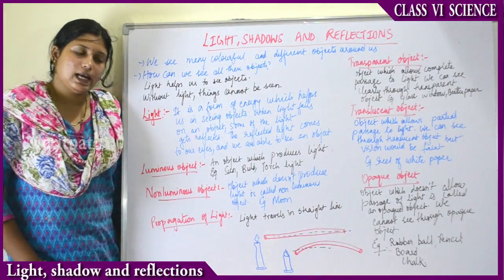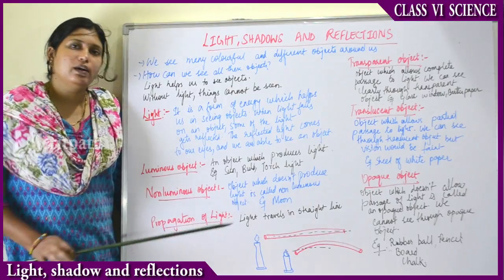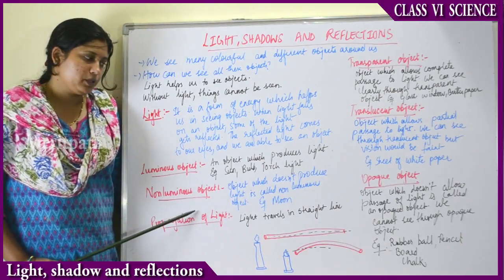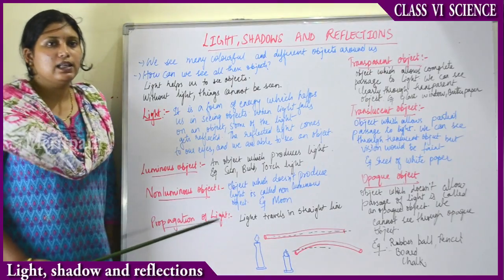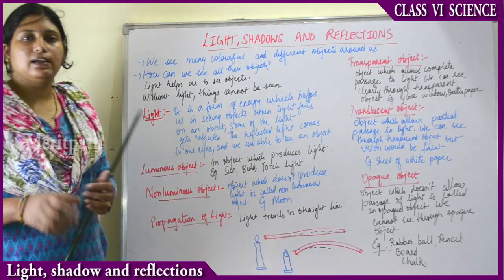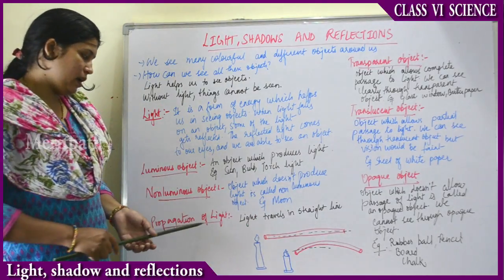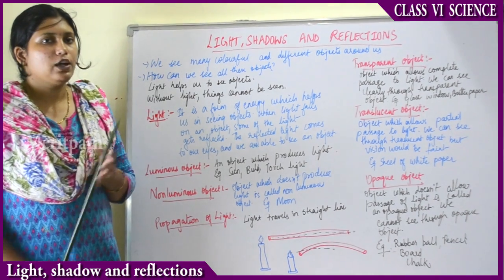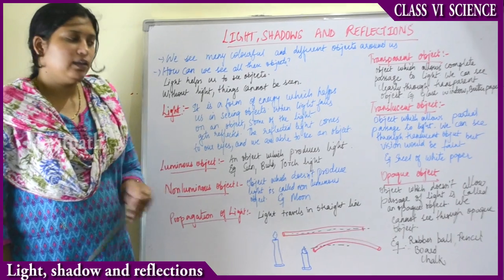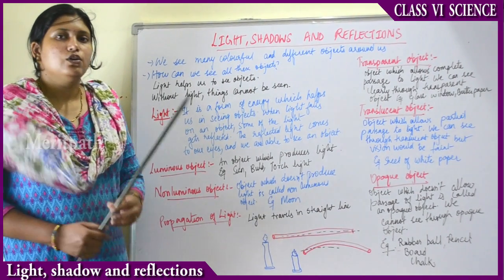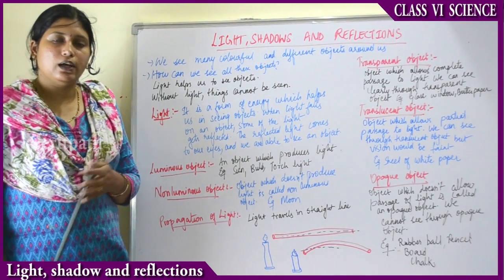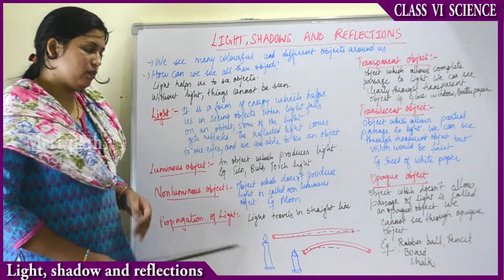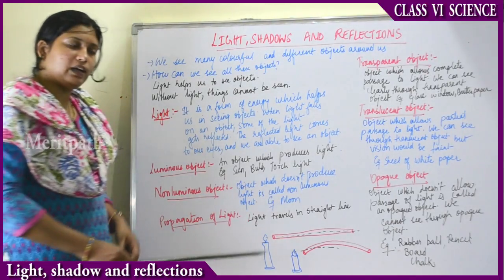What is a non-luminous object? An object which doesn't produce light is a non-luminous object. The sun produces light and gives us light, whereas the moon doesn't give us any light — that is why the moon is a non-luminous object. How does light propagate? Light always travels in a straight line — from the sun to the earth, light always reaches in a straight line.